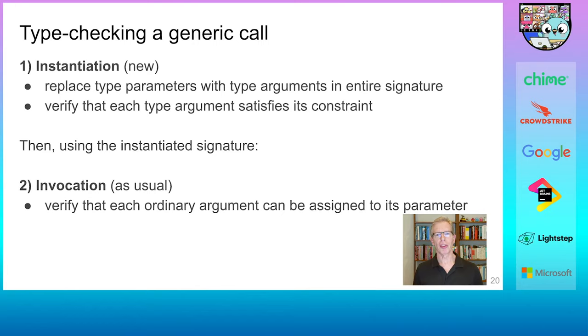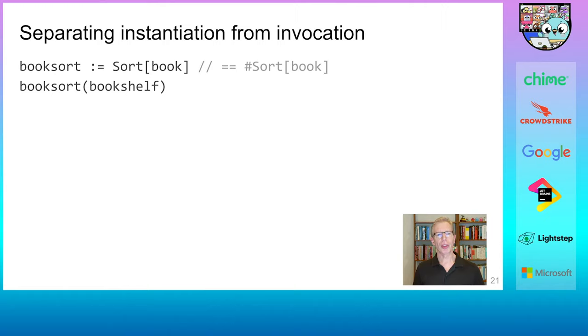To summarize, type checking a generic function call consists of type checking its instantiation, followed by type checking its invocation. So type checking and instantiation is always done in two steps. First, all type parameters are replaced with their type arguments in the entire signature, and after that, it is checked that each type argument satisfies its constraint. And this substitution step is absolutely central to instantiation. If the function was successfully instantiated, the compiler checks the function invocation as usual.